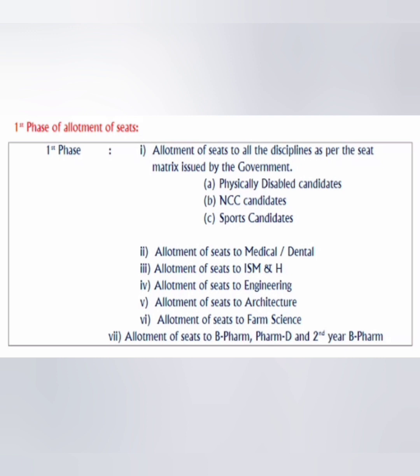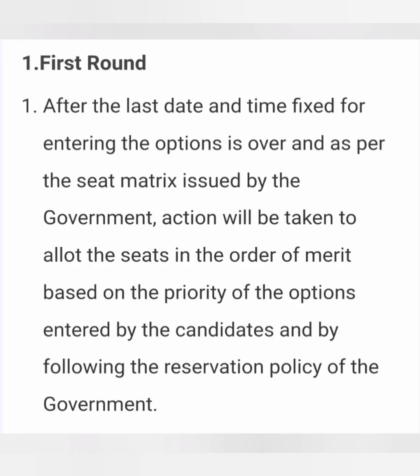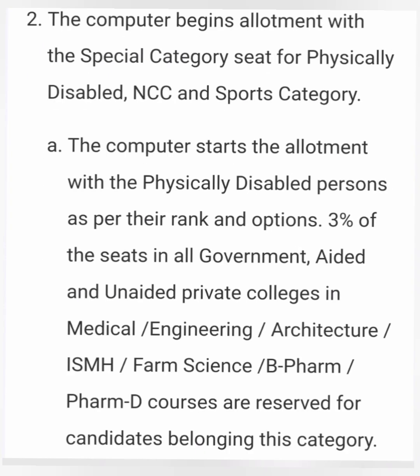Let's see the detailed version. Once the last date for option entry is fixed and your option entry is completed, the government will release the seat matrix. In the seat matrix you can see how many seats are available in the first round of counseling, provided as per the reservation policy. The computer begins allotment from special category seats.